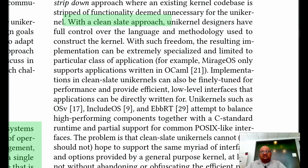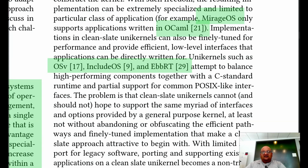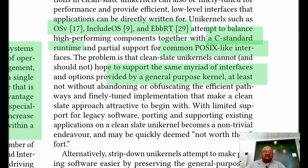One way to build a unikernel is from scratch. This is essentially like building a library of components that one could use to build an operating system. There are many examples such as MirageOS, which only works with OCaml, and a bunch of others. But the issue is that in order for them to gain any traction, they still need some semblance of a standard C runtime and some support for common POSIX-like interfaces. And if you do that with the same level of support that a general purpose kernel has, you've given up the advantages of shedding all that complexity.